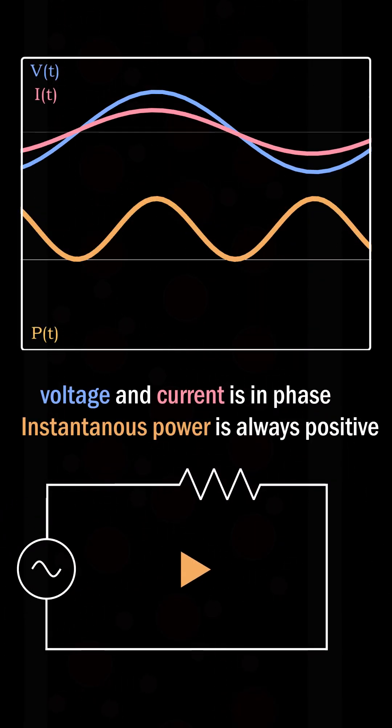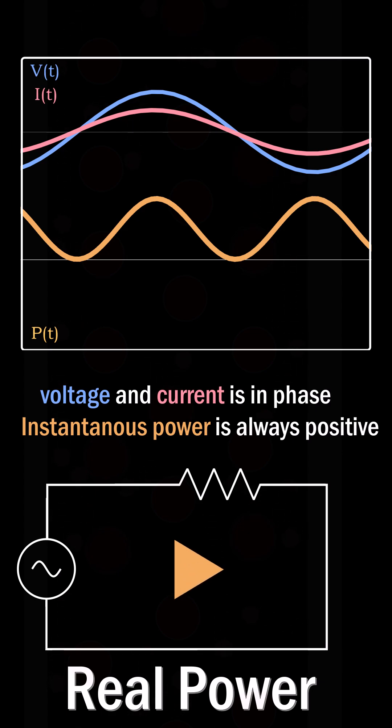Even when the voltage reverses, the collisions still happen, so power is always positive.